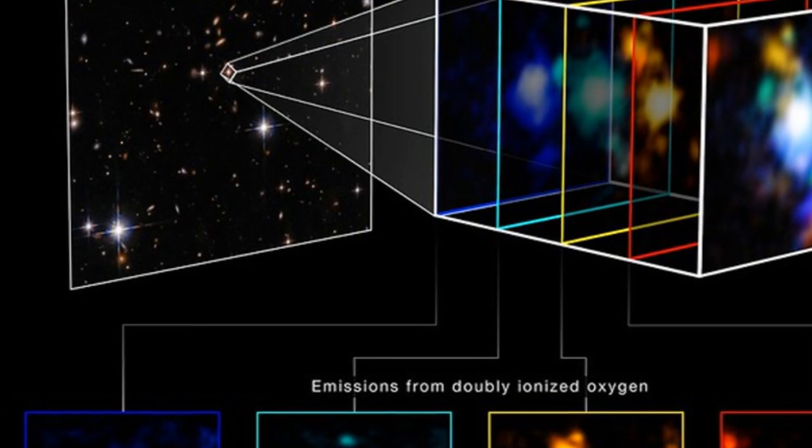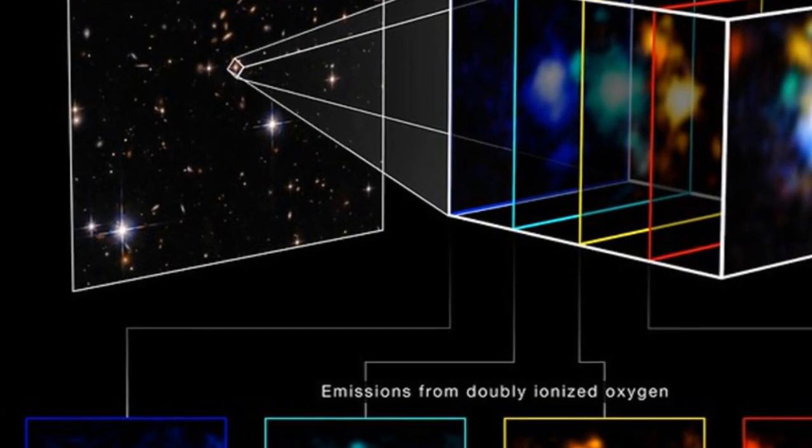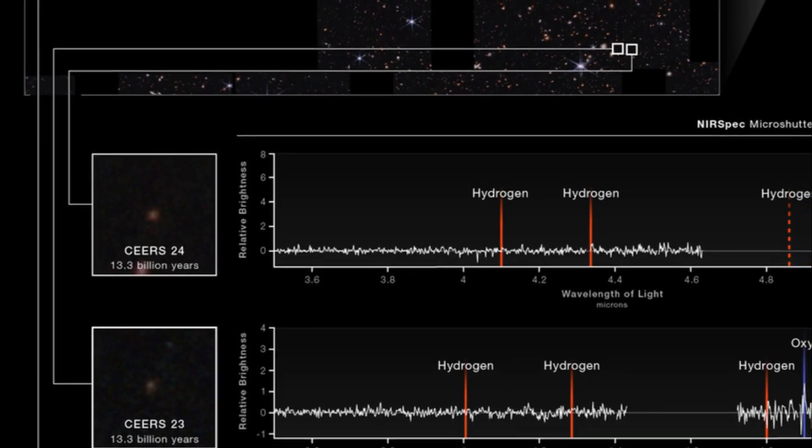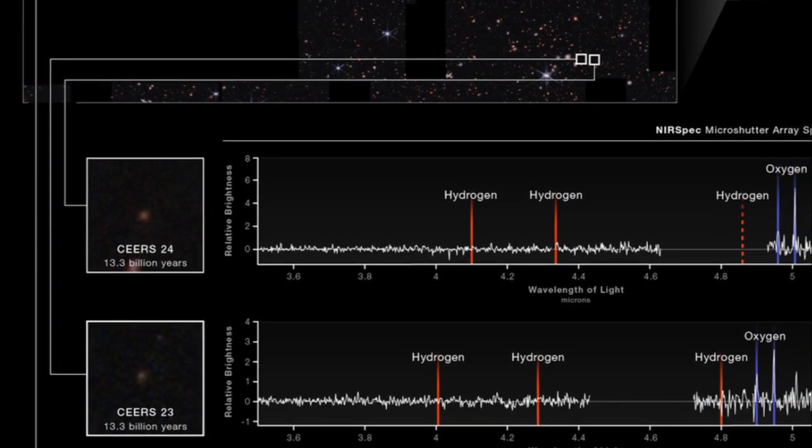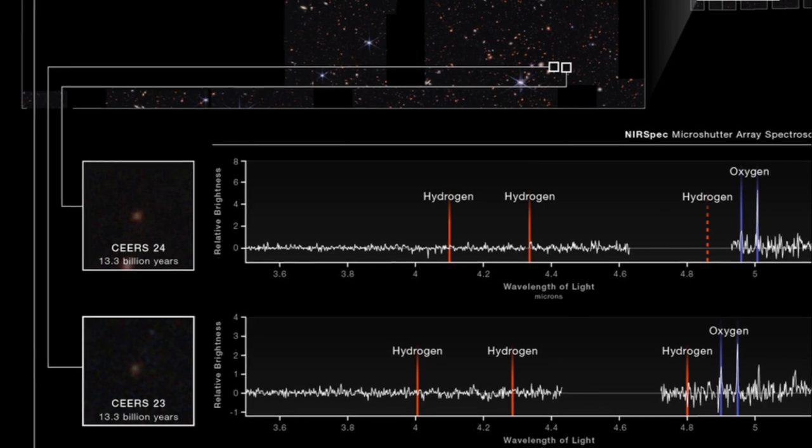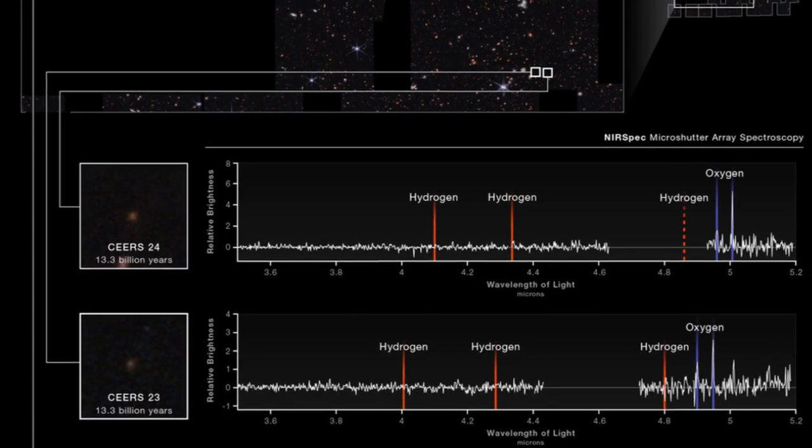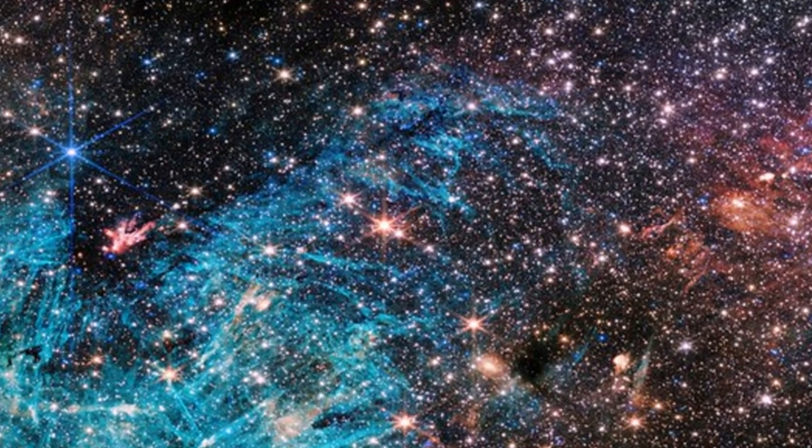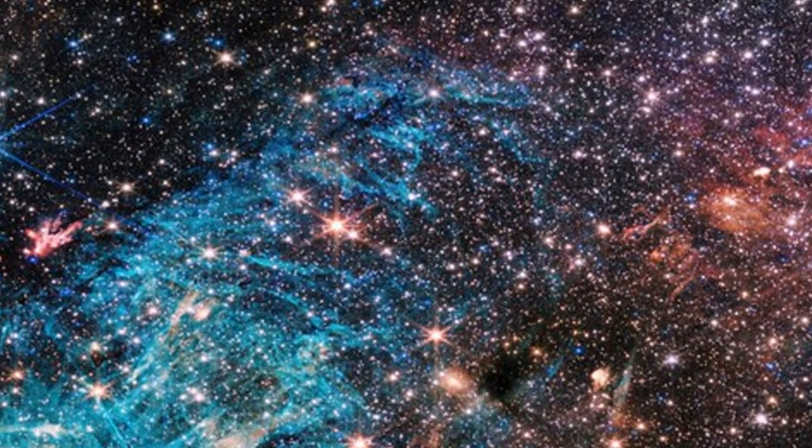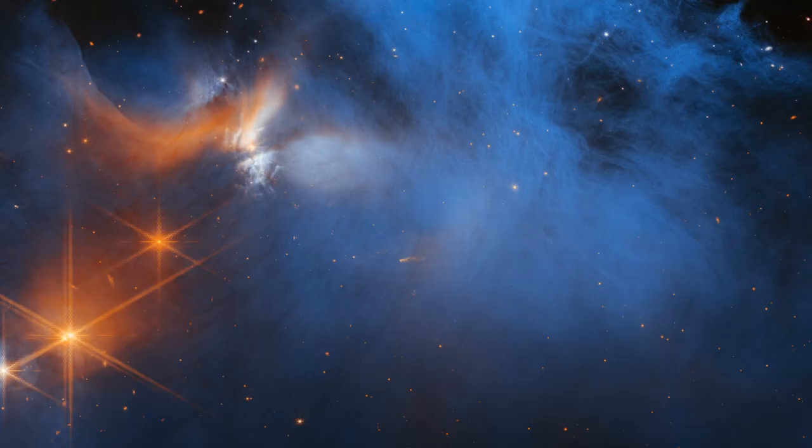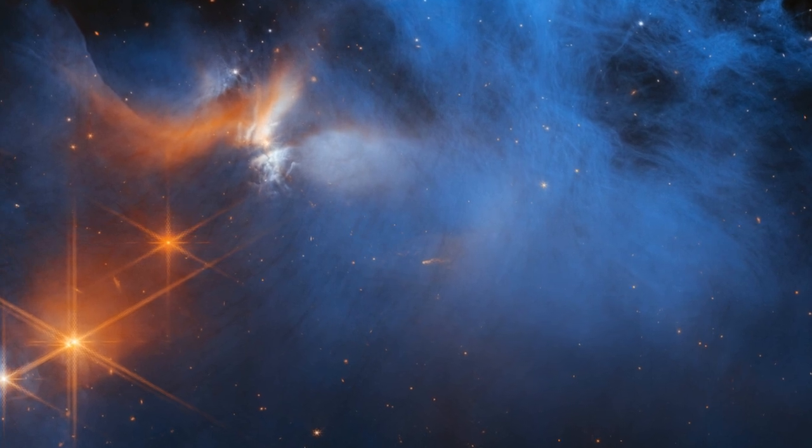By analyzing these images, scientists can learn about the size, shape, and color of distant galaxies, which in turn can tell us about their age, their composition, and their rate of star formation. It's like piecing together a cosmic jigsaw puzzle, with each image providing another piece of the puzzle. The first image taken by the James Webb Space Telescope was a groundbreaking achievement, a testament to human ingenuity and the power of science.